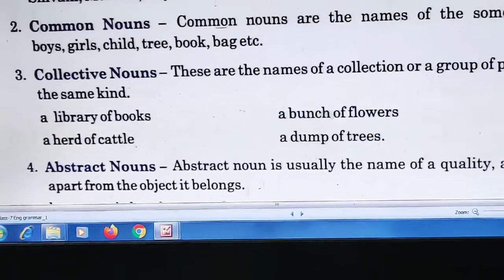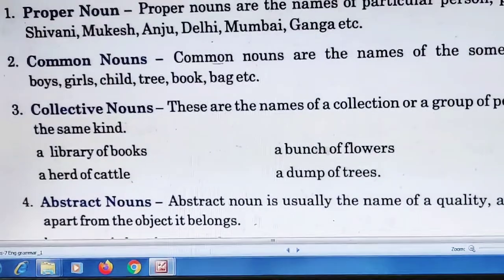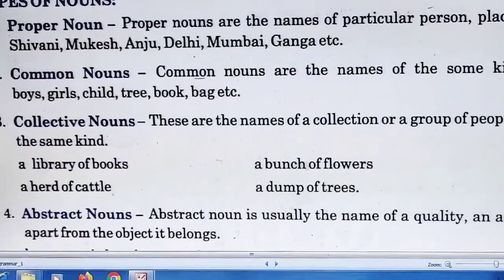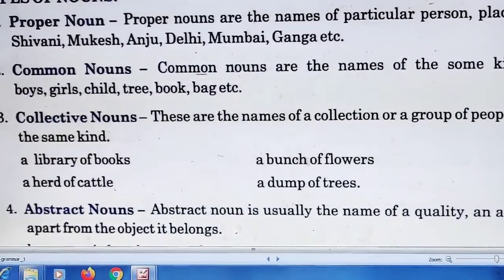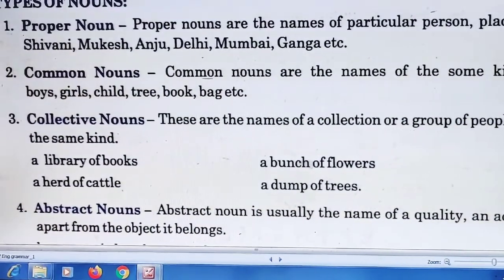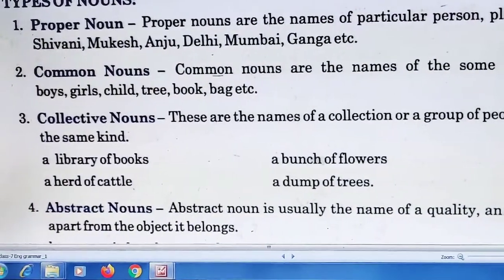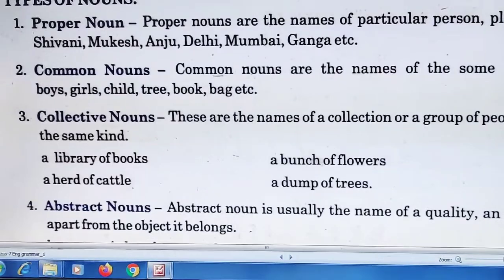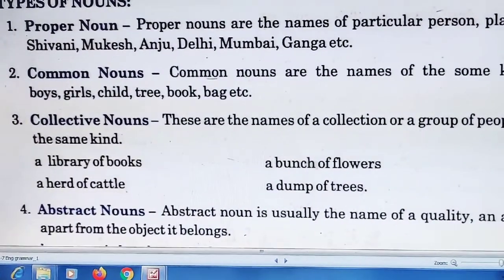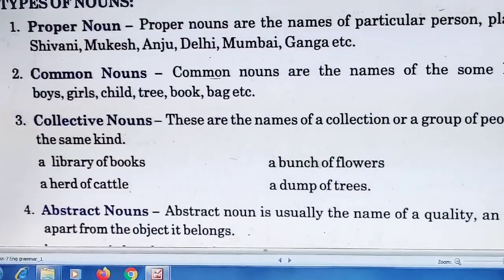Proper nouns are the names of a particular person, place, or thing. If we are talking about a specific person, that is a proper noun. For example, Siwani — if we are talking about Siwani specifically, it refers to that particular person only. Other examples: Mukesh, Anju, Delhi, Mumbai, Ganga, etc. — names of particular persons, places, or things.